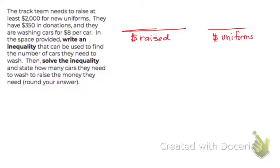So we're going to raise some money. And do we want that money we raised to be less than the money we need for our uniforms or greater than? We want the money we raised to be greater than the amount of money we need to pay for our uniforms. It says it needs to be at least $2,000. So that means we would be fine if it's greater than $2,000 or if we had exactly $2,000. So greater than or equal to.